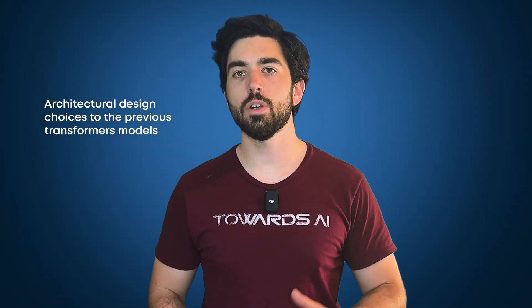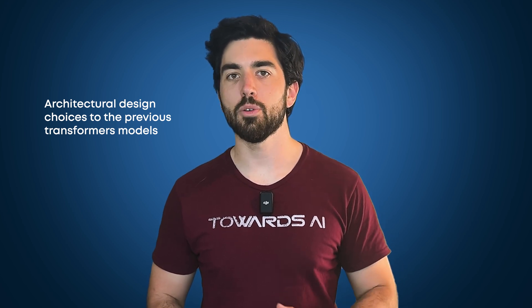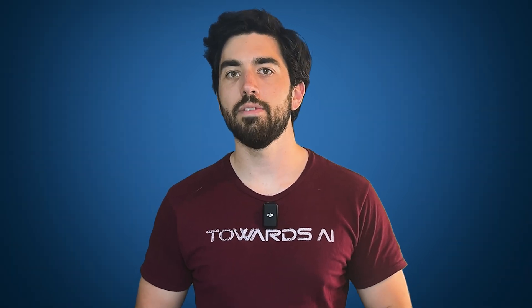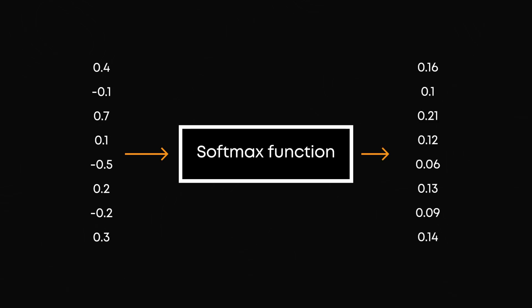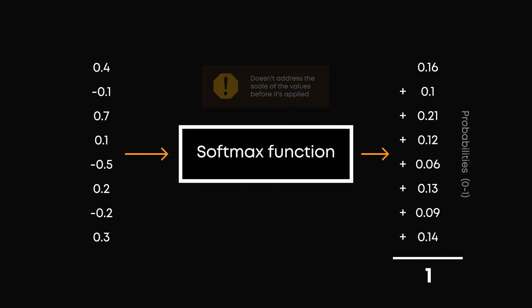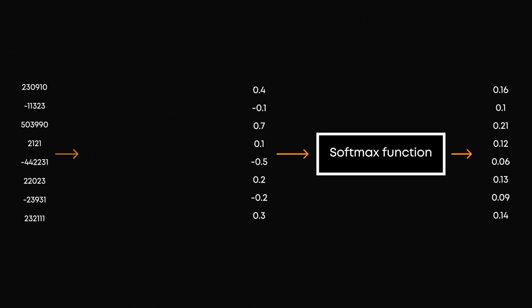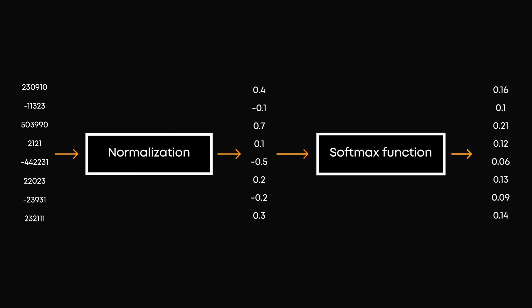So how exactly did they solve these issues? They made a few key architectural design choices to the previous Transformer models based on their observations while building and training them. During training of these multimodal models, they noticed the model's performance degraded over time. This was due to a slow increase in certain values or norms caused by the softmax function. The softmax function transforms a vector of scores into probabilities — it takes our processed numbers and creates a real probability in the range of 0 to 1, ensuring the sum of all probabilities equals 1. However, softmax alone doesn't address the scale of the values before it's applied, which can cause problems over time. Normalization ensures that the values fed into softmax remain stable by keeping them within a certain range, helping maintain consistent training and performance. Without normalization, the values can grow too large, leading to instability.